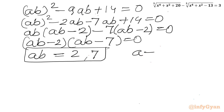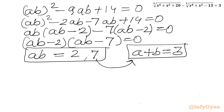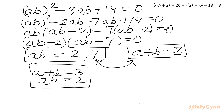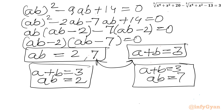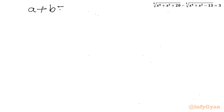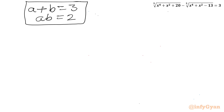Now from equation 2, a + b = 3. I can frame two systems of equations: first system: a + b = 3 with ab = 2; second system: a + b = 3 with ab = 7.